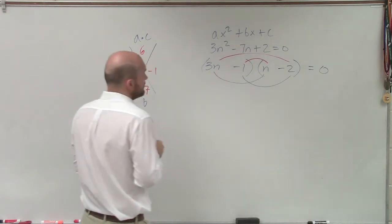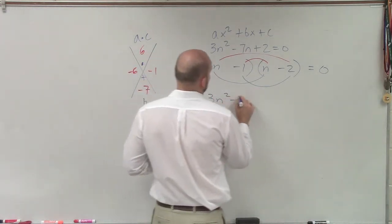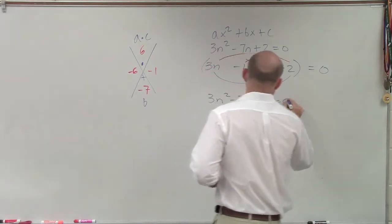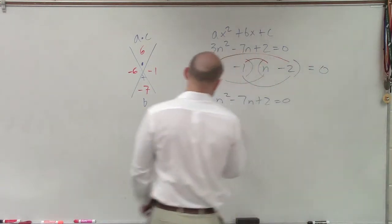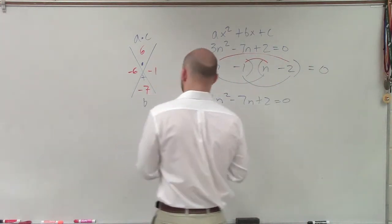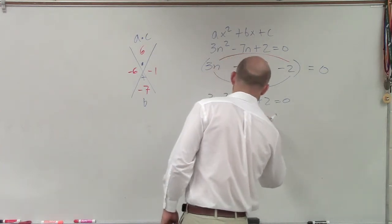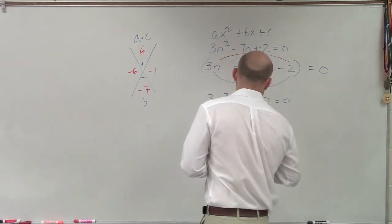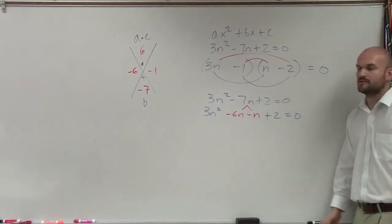Okay. So then what I do is I rewrite my equation, 3n squared minus 7n plus 2 equals 0. And now what I'm going to do is I'm going to replace it with these two middle terms. So now I'd say 3n squared minus 6n minus n plus 2 equals 0. You see what I did?